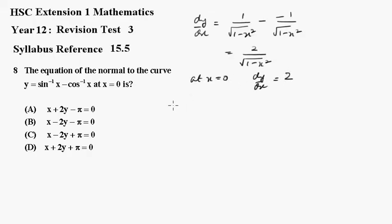Now when x equals 0, we can see y equals the inverse sine of 0 minus the inverse cos of 0. Inverse sine of 0 is 0. The inverse cos of 0 is pi upon 2. So that's going to be minus pi upon 2.